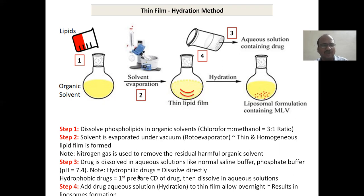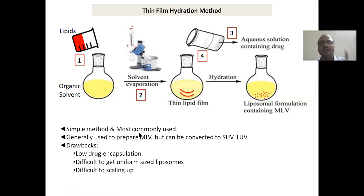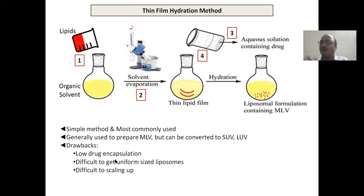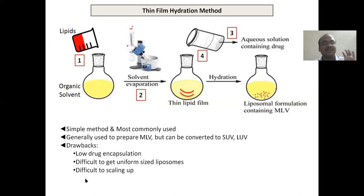Here, liposome formation — you will get MLV (multilamellar vesicles). This method is very simple, most commonly used, most widely used, and generally used to prepare MLV. But the MLV can later be converted to SUV (small unilamellar vesicles) or LUV (large unilamellar vesicles). This method has drawbacks: low drug encapsulation — drug remains outside only and does not enter into the liposomes much. It is also difficult to get uniform size of liposomes, and difficult to scale up.